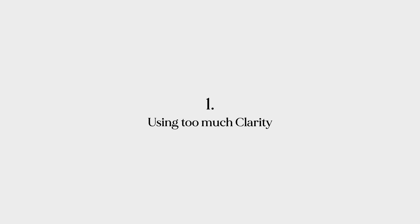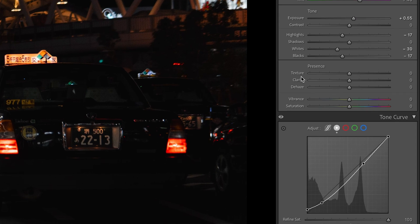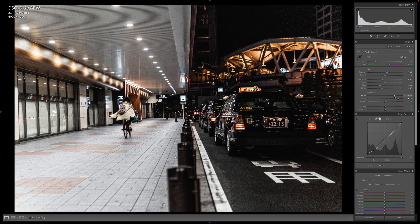Number one is pushing too hard on clarity. This applies to all the sliders, but in particular the three in the presence tab: texture, clarity, and dehaze. These three have a very impactful effect on the image, making it very dramatic or very soft, so we have to be very careful with the amount we introduce. In the early days, I tried to copy Alan Palander and used clarity and texture all the way to the plus 80s or plus 90s for a dramatic image — looking back, it looks completely ridiculous, artificial, inorganic, and naive.